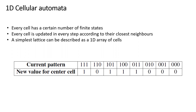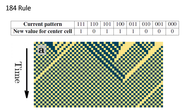For example, we can take the 184 rule. You can see here are the sets of rules and this is what it generates. What's going on here is that a chessboard grid is propagating as it is, downwards.